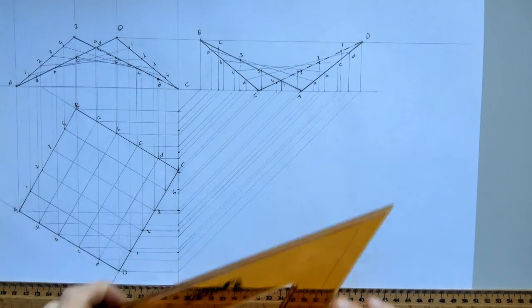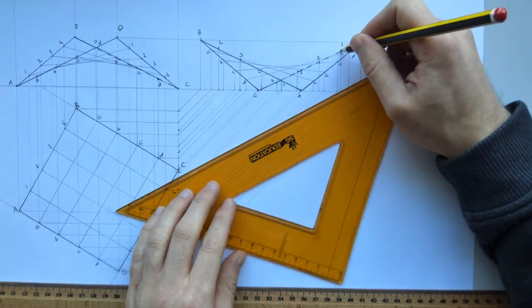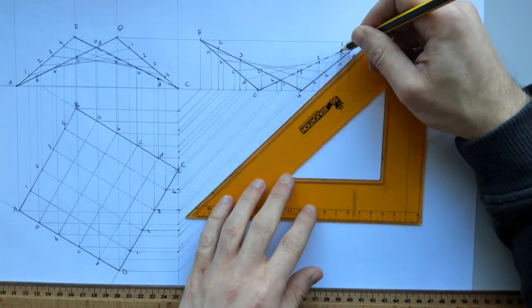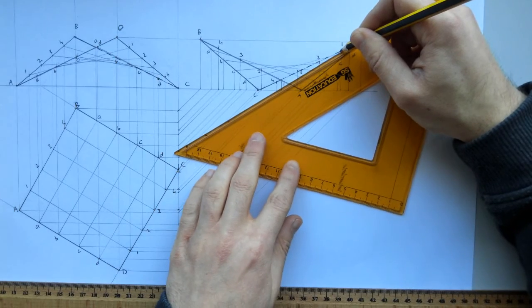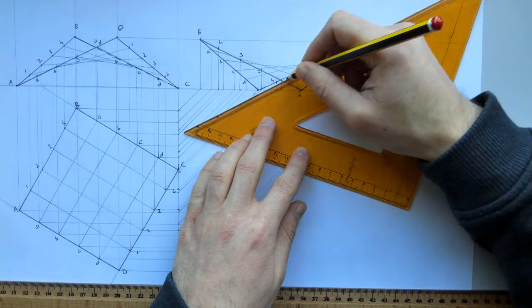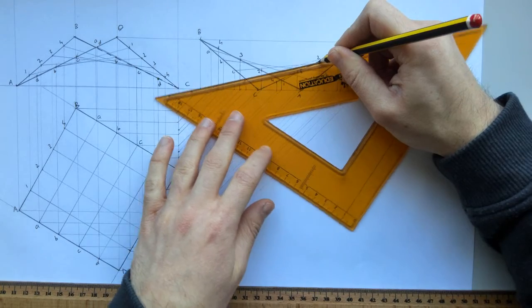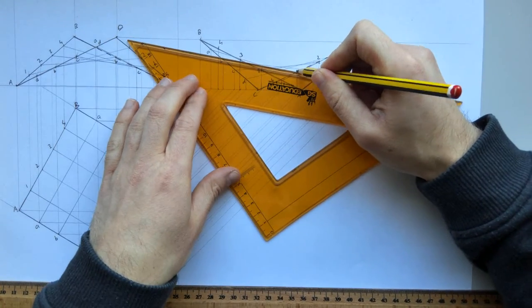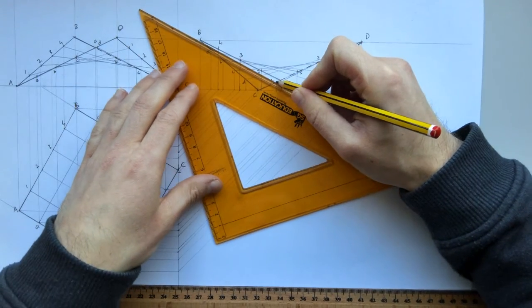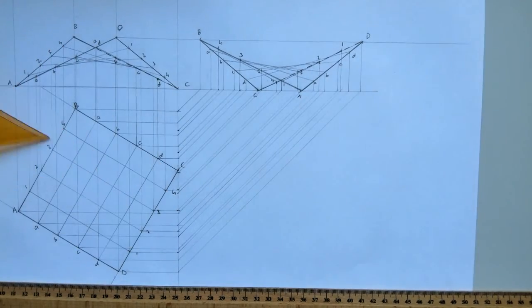And once again just repeat the process, connecting the points together. So I'm connecting the line C D to line A B. So I'm going to CD there. So 1 connects to 1 here. 2 connects to 2 here. 3 connects to 3 there. And finally 4 connects to 4 there.